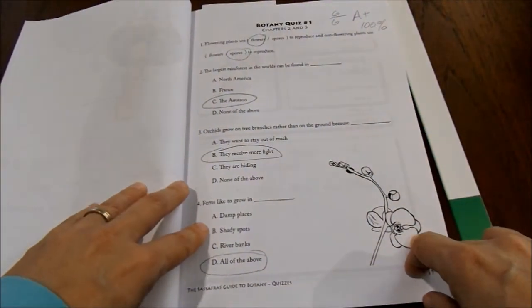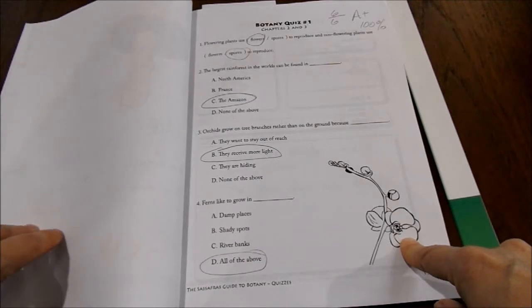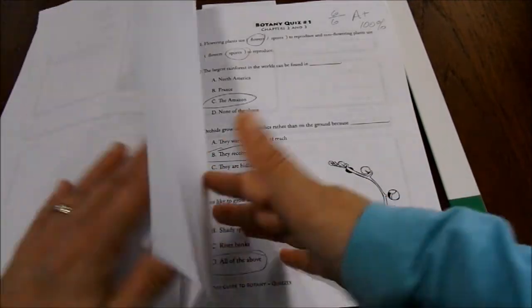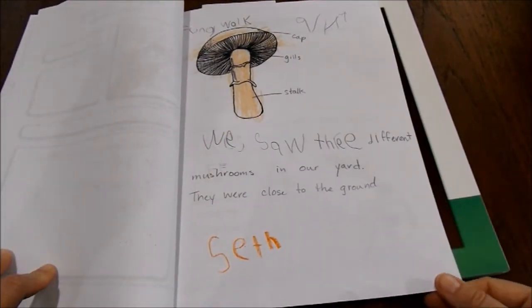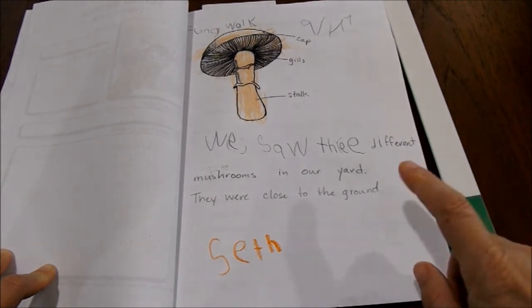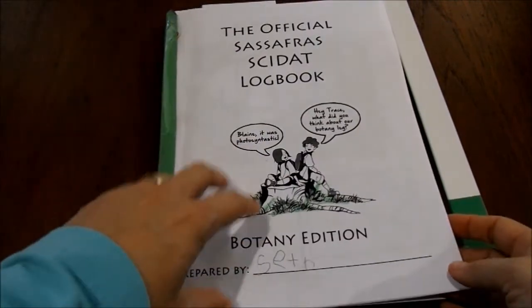So every other week we would do one of these, and if we did a nature study we would try to add a nature journal sheet to his logbook. So in that way this journal was really a customized version of his journey through volume three.